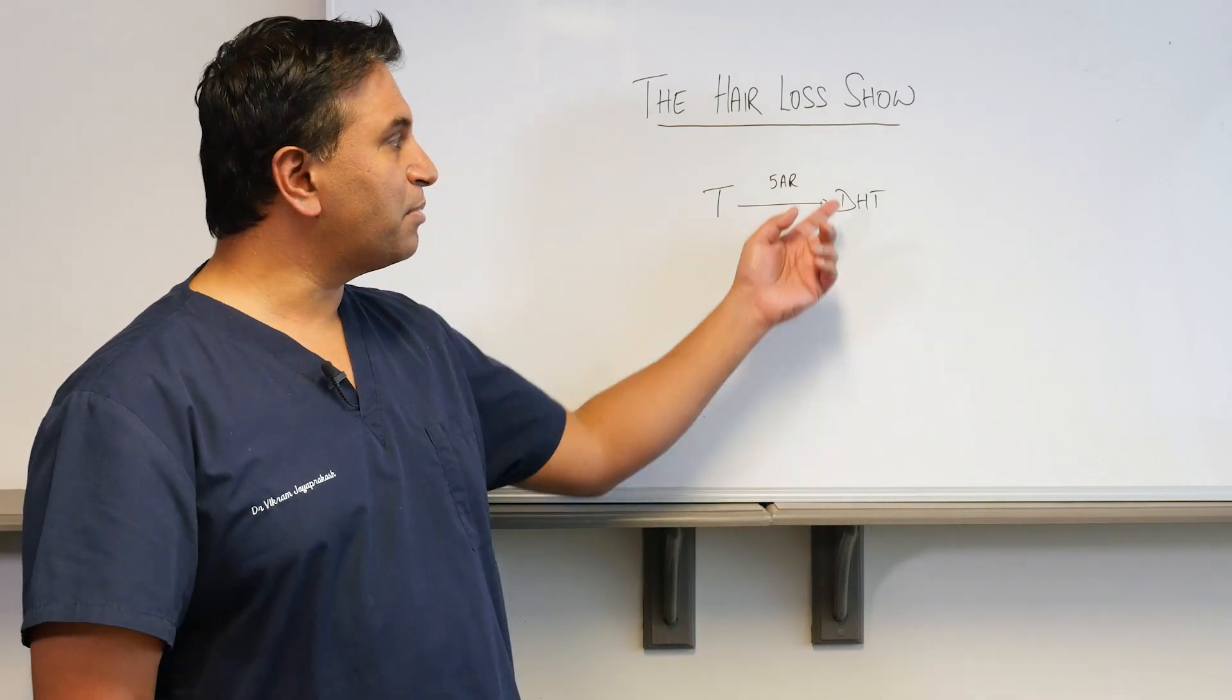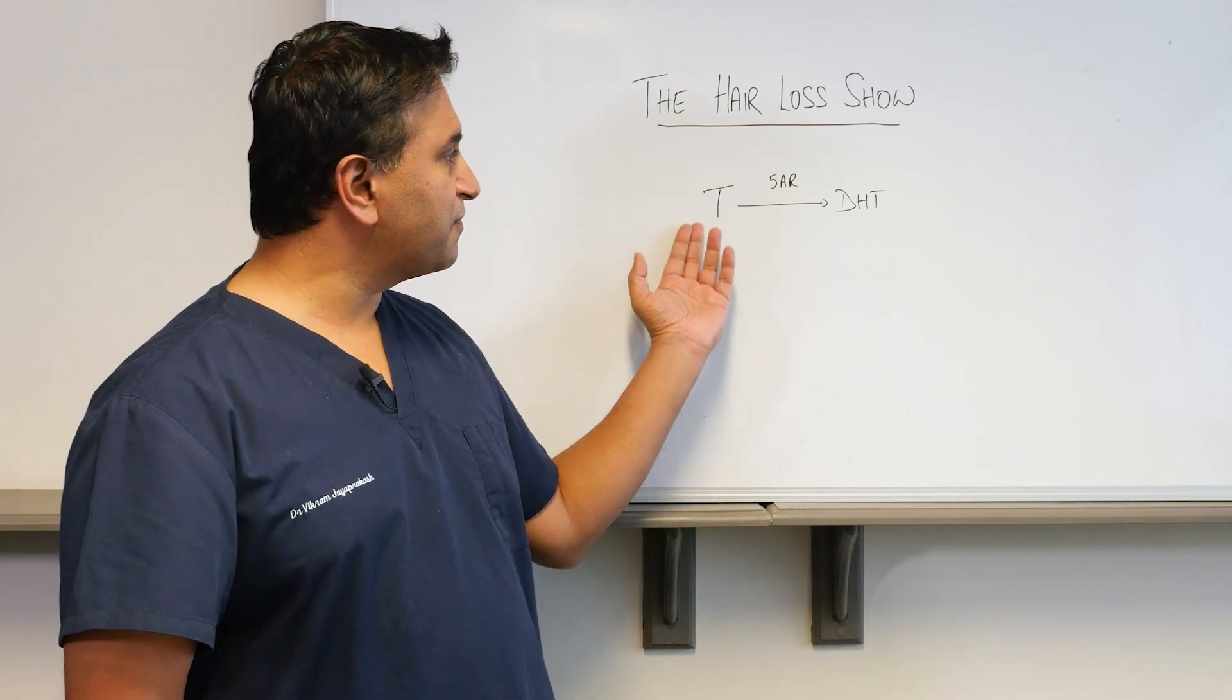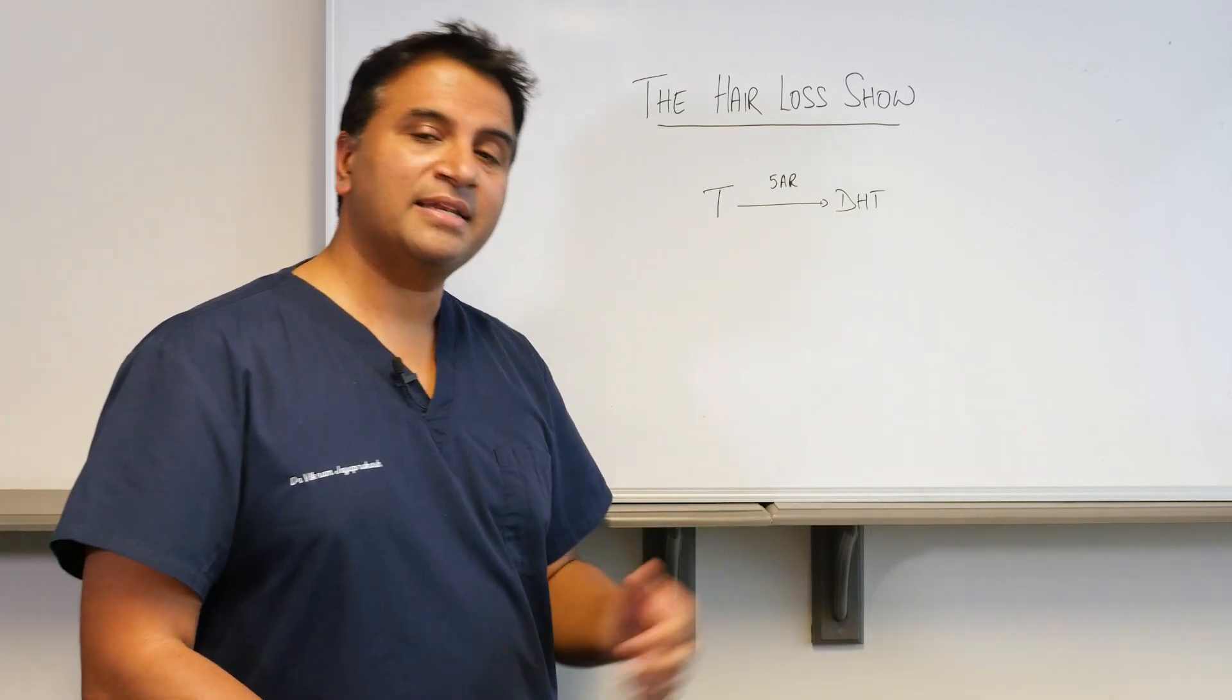What finasteride does is it blocks the 5-alpha reductase enzyme, and if you block that enzyme you block the conversion of testosterone to DHT and therefore lower DHT in the system.